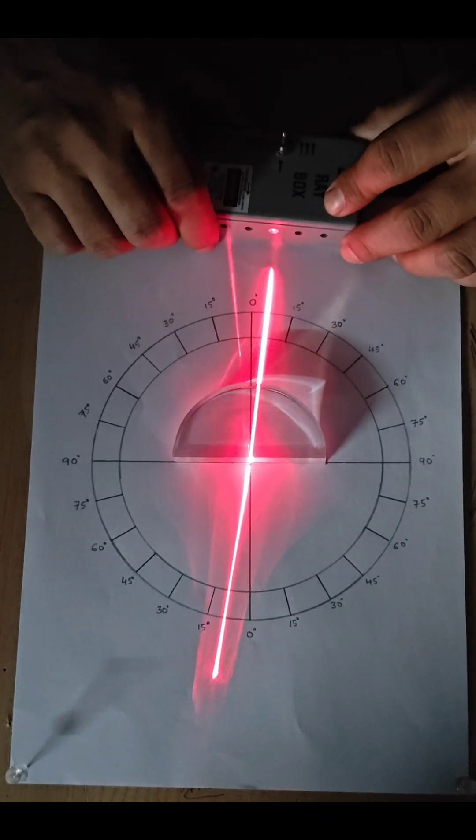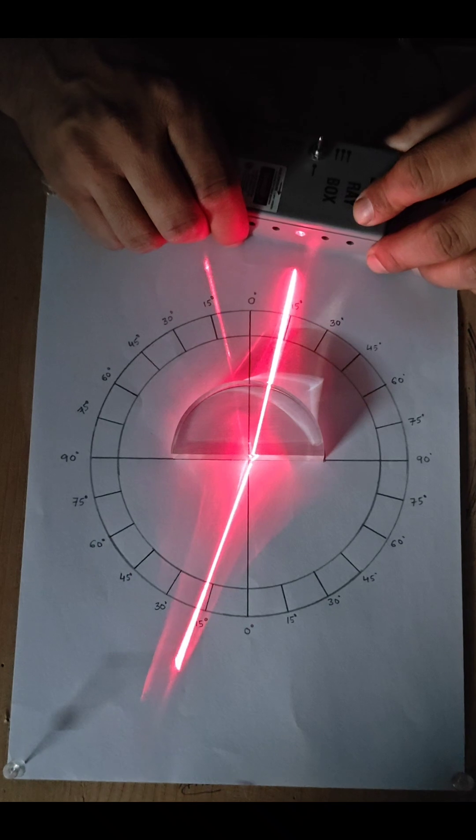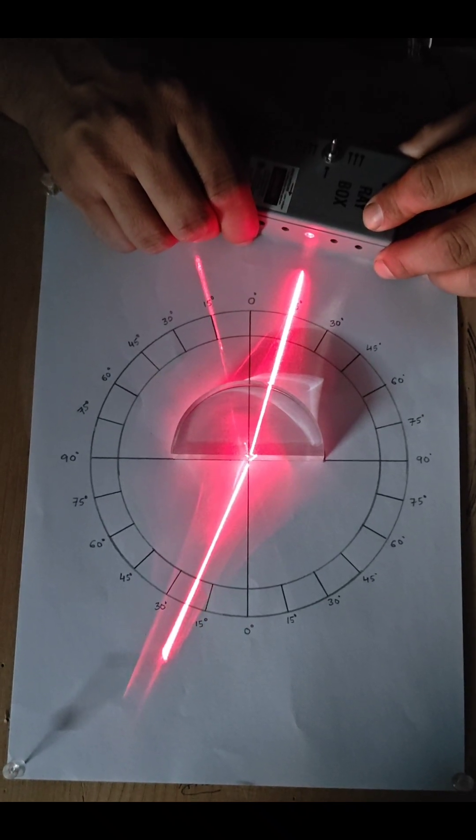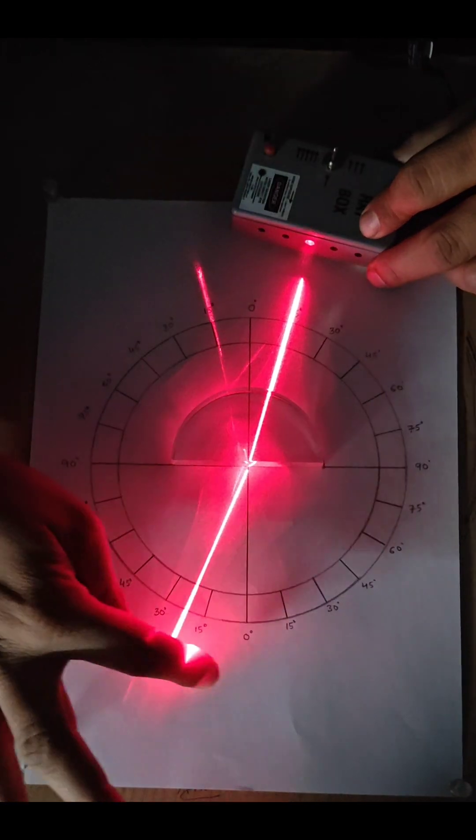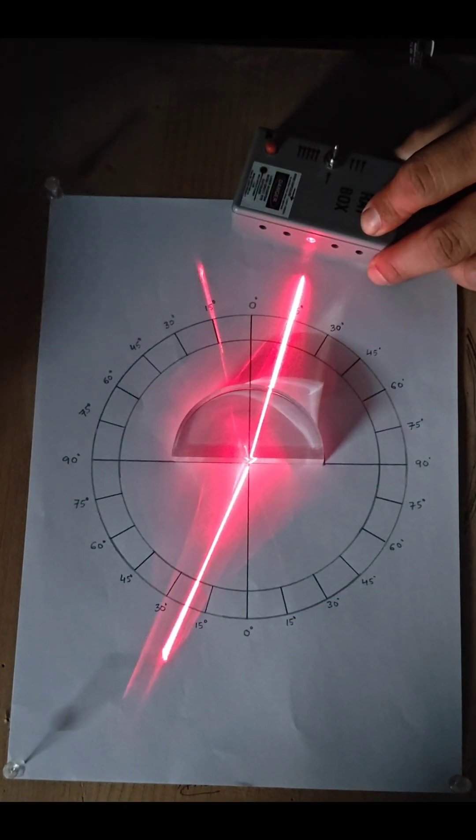Now, if we increase the angle of incidence, so now if we see somewhere here at 15 degree, so at this 15 degree angle of incidence, we have a certain angle of refraction over here which is greater than 15 degree.